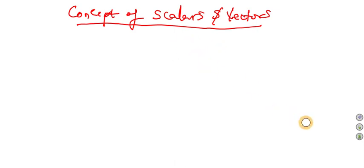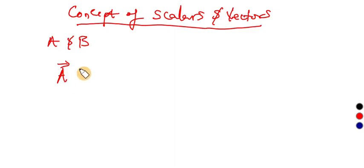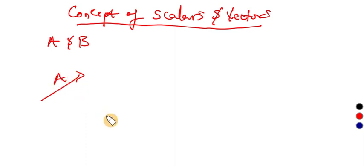If you have two vectors a and b — a vector is described with a capital letter, or a capital letter with an arrow. If you have a vector in this direction — let's say this is a — and another one in this direction — say, this is b — we can add these two vectors.